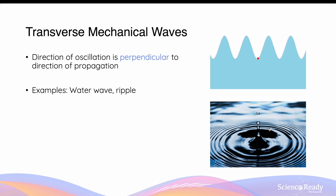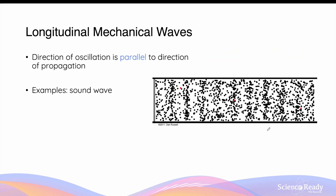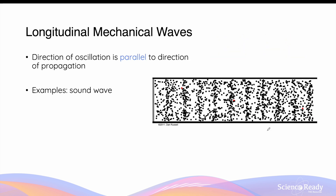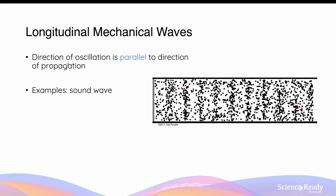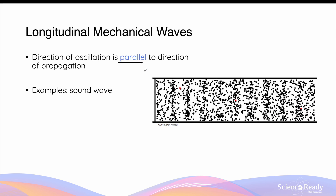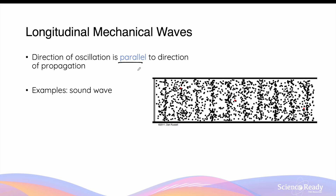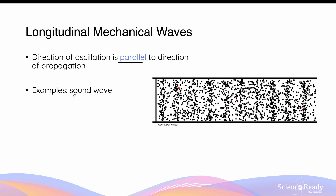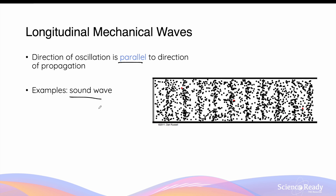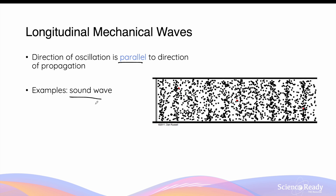Besides water waves, a ripple is also a form of transverse mechanical wave you can observe in real life. On the flip side, a longitudinal mechanical wave is when the direction of oscillation is parallel to the direction of propagation. The best example of a longitudinal mechanical wave is a sound wave, as it transmits through different mediums such as air, water, or a solid.